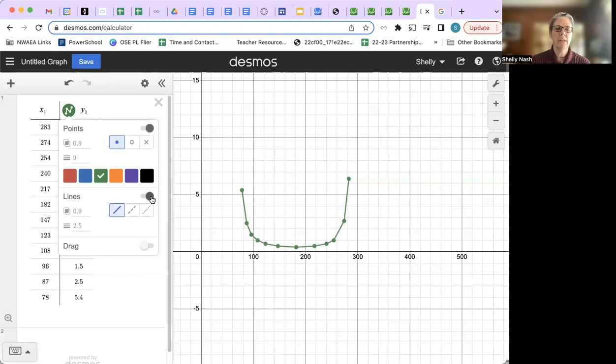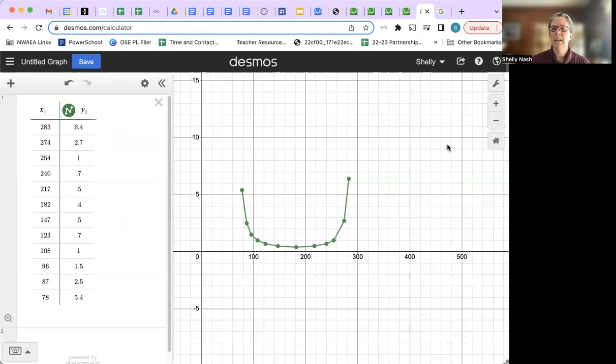Once you turn the line toggle on, you're going to get a line and that should give your students a pretty good graph to look at and maybe analyze.